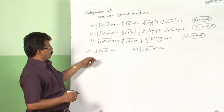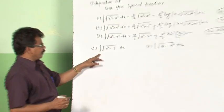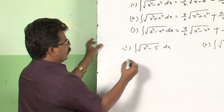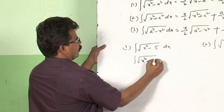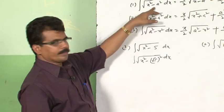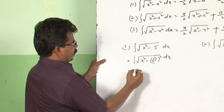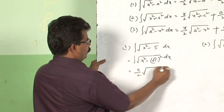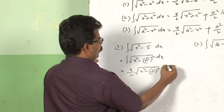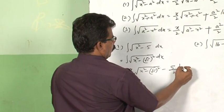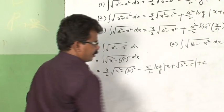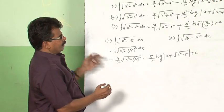Let us see two questions of this form. For example, the first question is integral root of x square minus 5 dx. This is not directly in one of the standard forms, but we can reduce it. This can be written as root of x square minus root 5 whole square dx, since there is a form root of x square minus a square. The integration is: x by 2 times root of x square minus root 5 whole square, minus root 5 whole square by 2 times log |x plus root of x square minus 5| plus c.